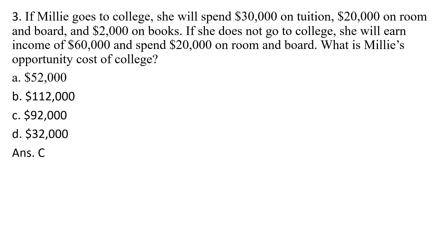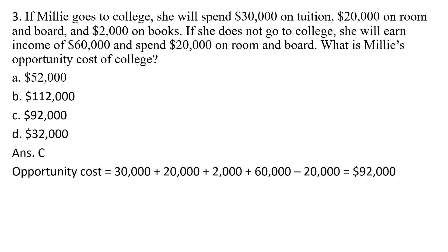The correct answer is C, $92,000. I took $30,000 plus the $20,000 of college room and board, added $2,000, then added in the foregone opportunity of earning $60,000 of income. Then I subtract out room and board from not going to college. Since the room and board costs of going to college and not going to college are the same, those two values cancel and we're left with $92,000.